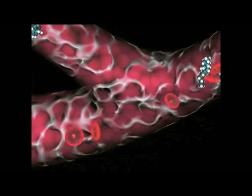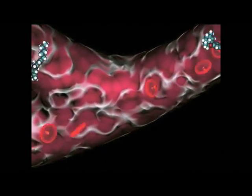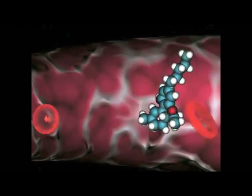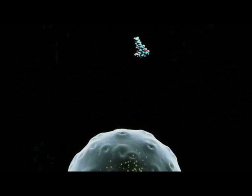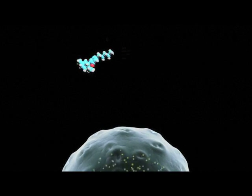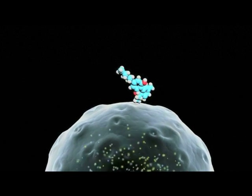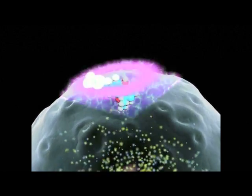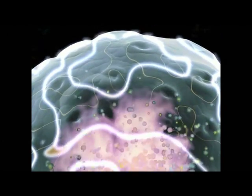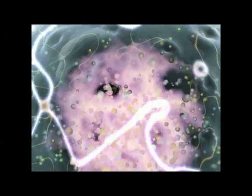After entering the bloodstream, this compound becomes available to individual cells in the brain. Delta-9-THC interacts with specific cell surface receptors. It is analogous to a key entering a lock. This triggers a reaction inside the cell.